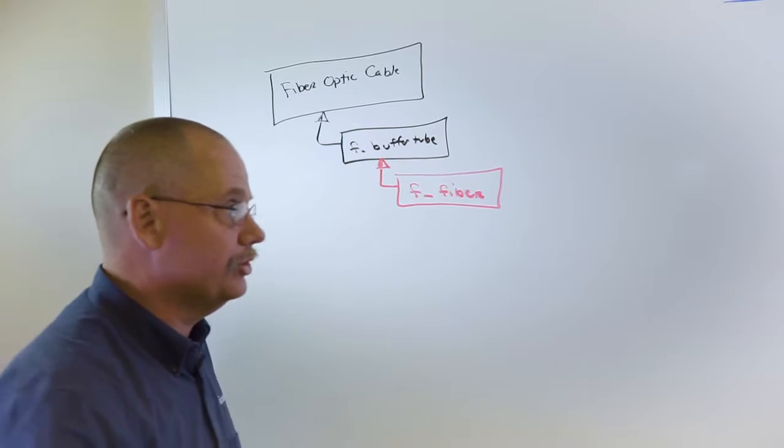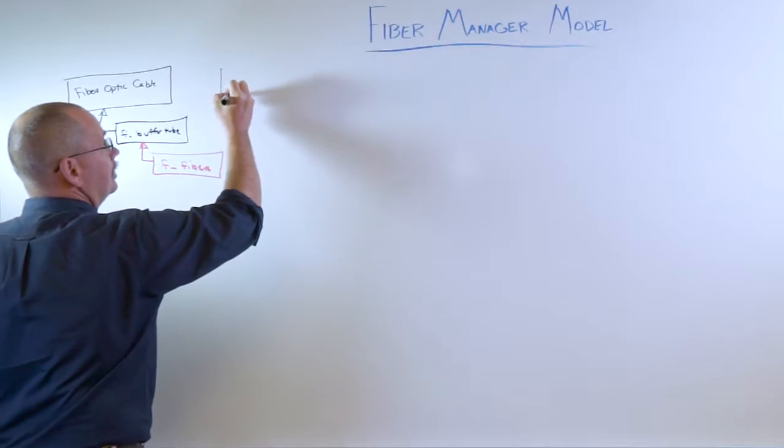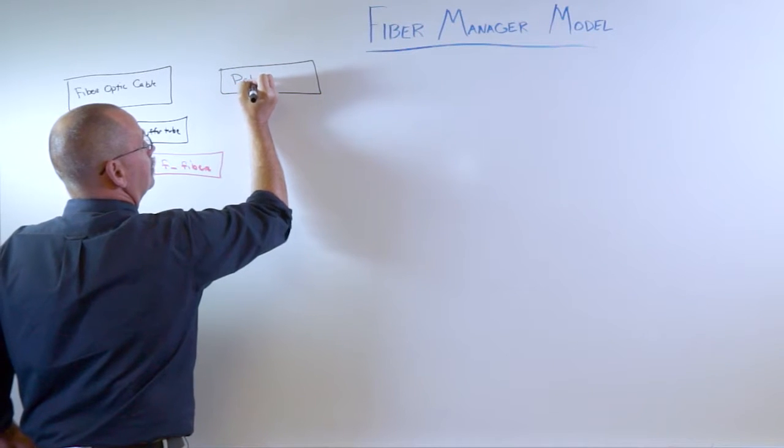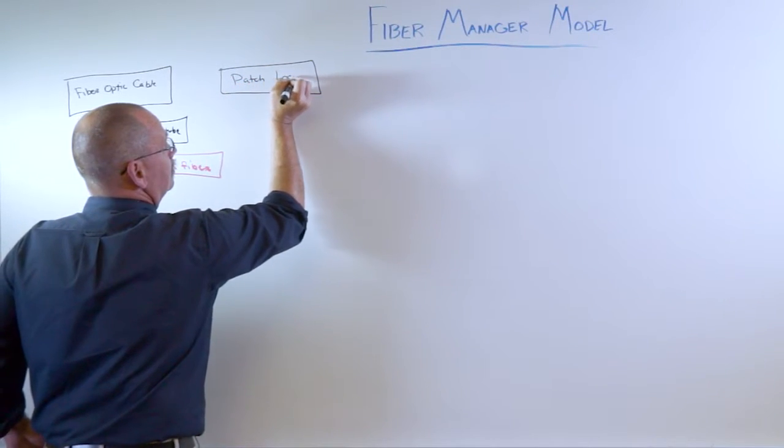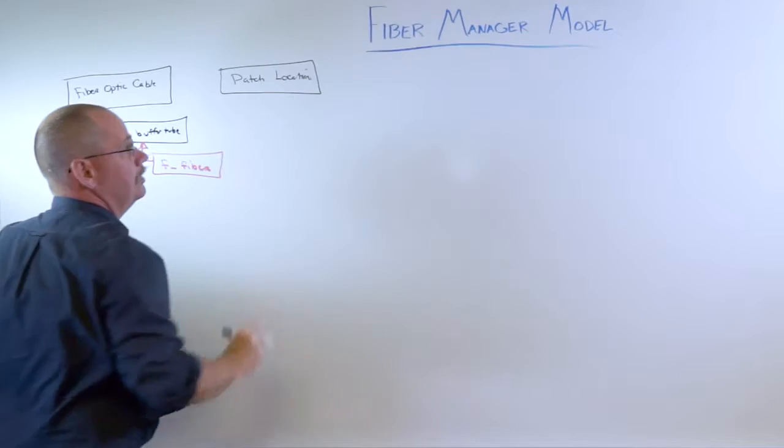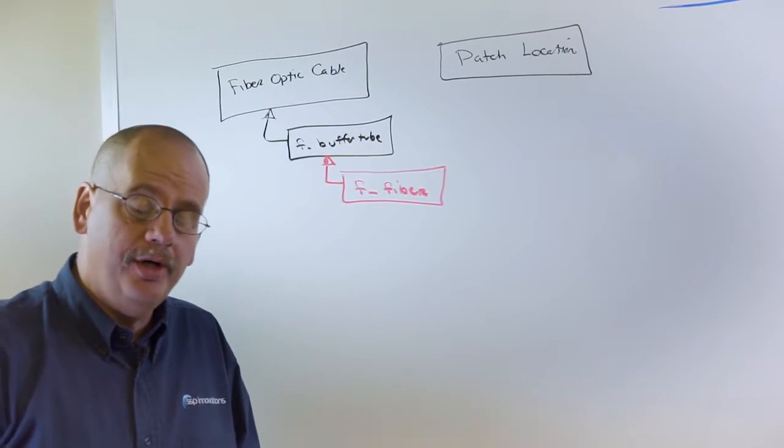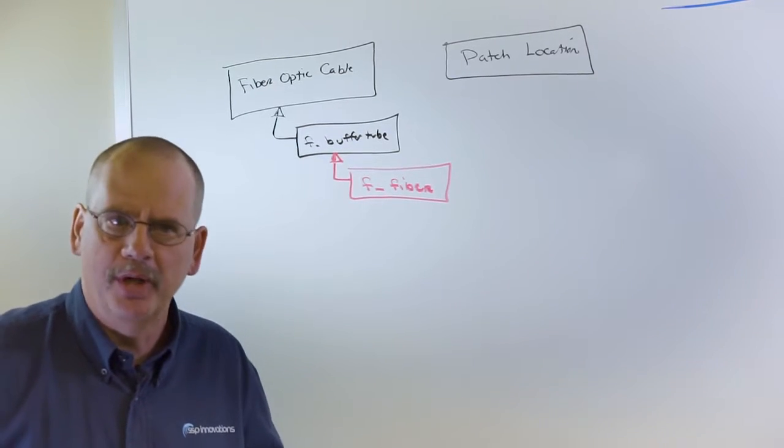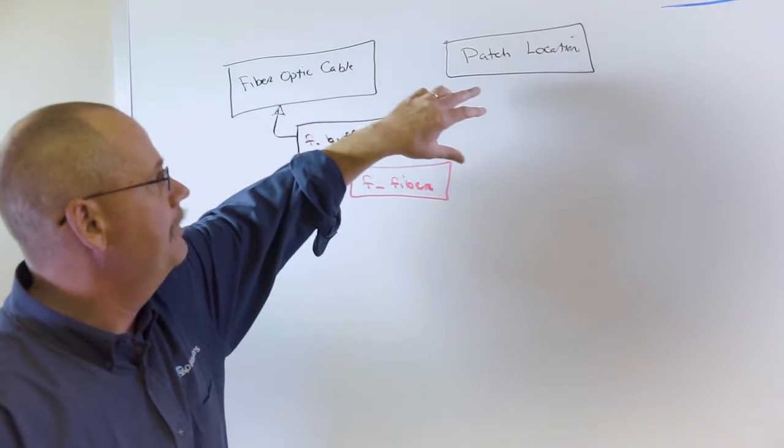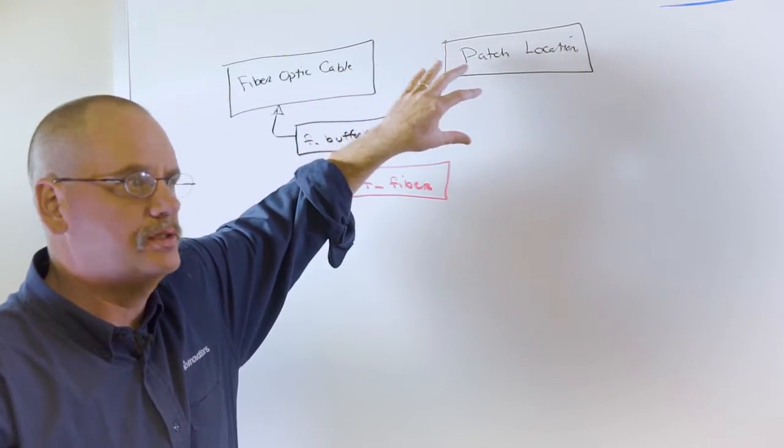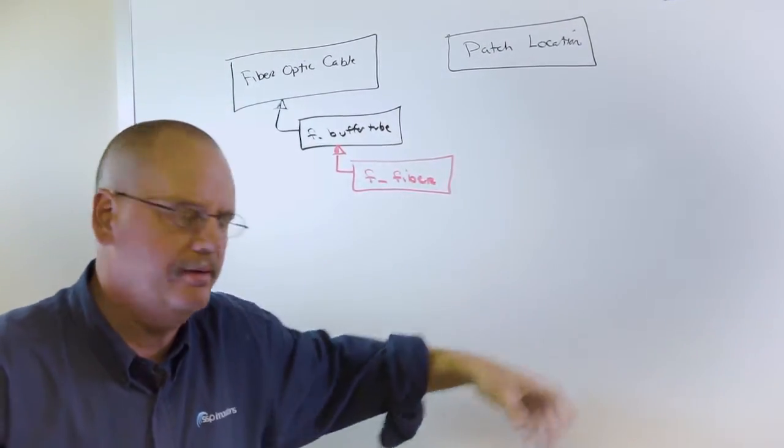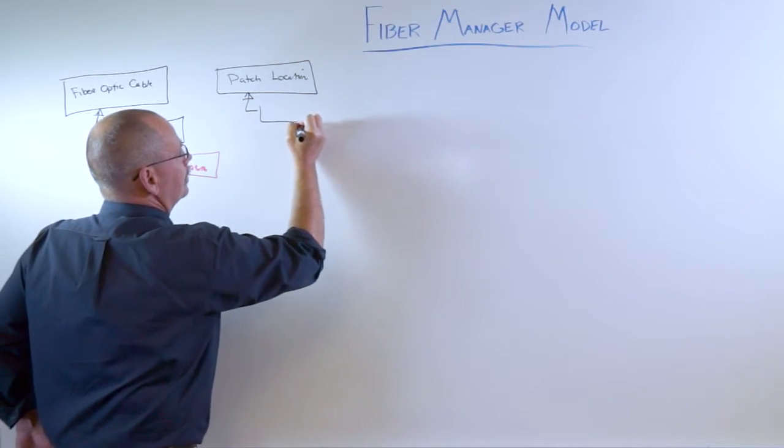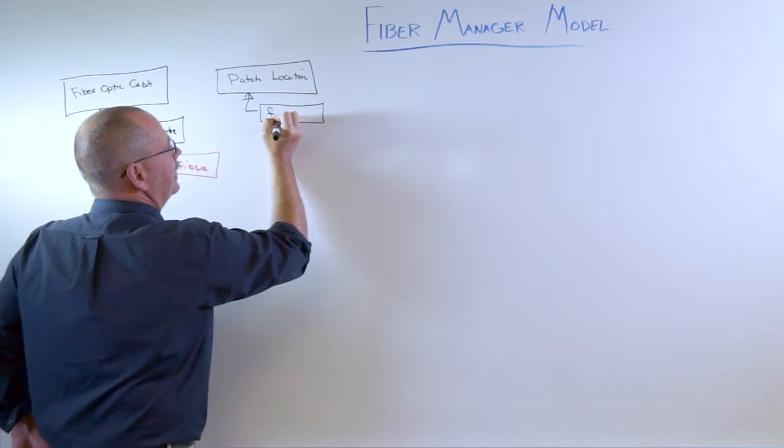Our second feature class that we're going to be talking about is the patch location. The patch location is pretty much where all you can consider like the fiber building where you have where all your connections are happening in your various and we'll go through the various related objects. The first related object we're going to talk about is the rack.